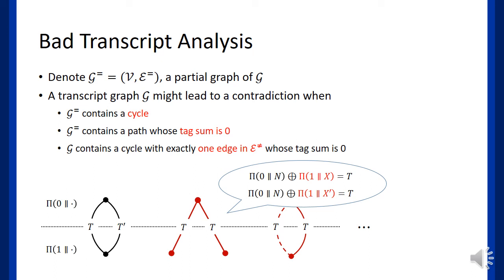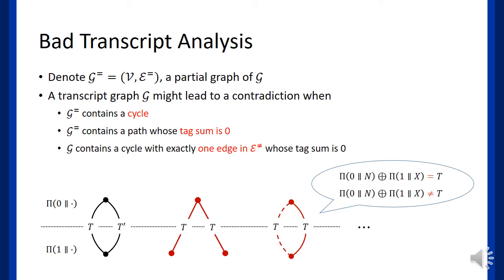Although the cycle in G_eq with zero tag sum does not have contradiction, for simplicity, we will identify this as a bad case. Finally, if G contains a cycle with exactly one dashed edge whose tag sum is zero, one will derive both equality and non-equality for the same equation.